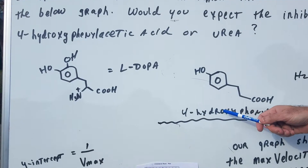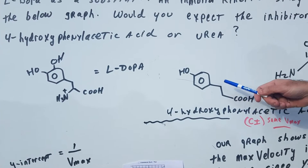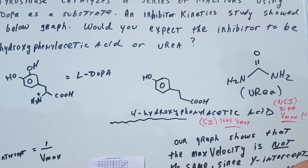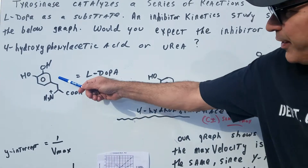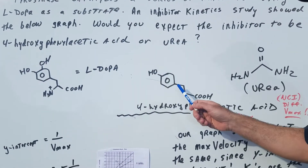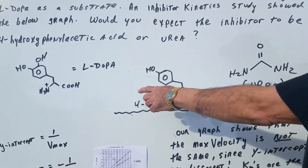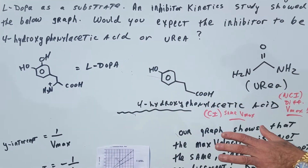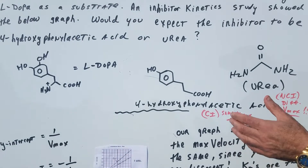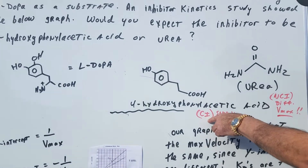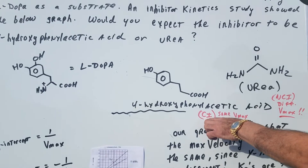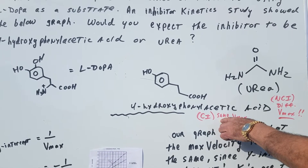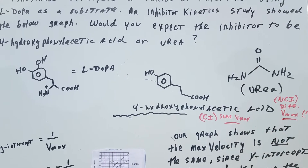Now, there's 4-hydroxyphenylacetic acid and there's urea. I think you would all agree this sort of looks like the substrate — they sort of resemble each other. So if there was going to be an inhibition, it would be a competitive inhibitor. And if there's a competitive inhibitor, the VMAX would be the same, as you know — they would just be competing for the active site.